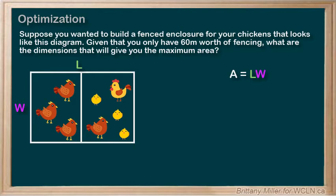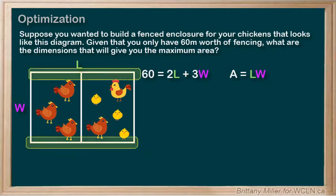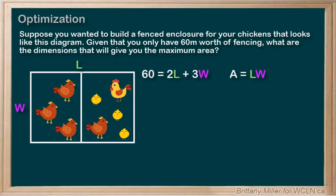We don't know A, L, or W, and this doesn't look like a quadratic at all. Luckily, we were given another piece of information: a constraint. Because we only have 60 meters of fencing, we can't just make the enclosure as big as we want. Let's write it out as an equation. 60 meters of fencing will be used for two of the lengths and three of the widths, so our constraint is 60 equals 2L plus 3W.